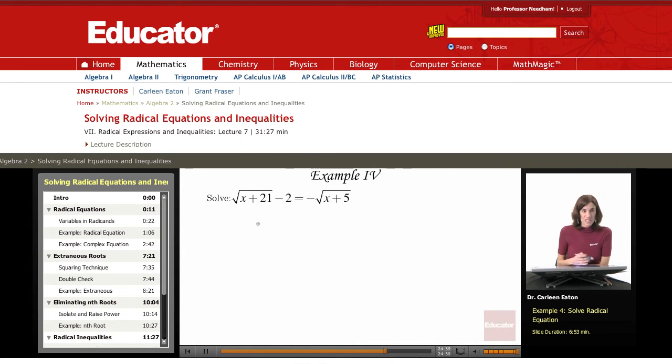So it's not going to be possible to just isolate the radical. Therefore, my first step is just going to be to get rid of at least one of the radicals by squaring both sides.